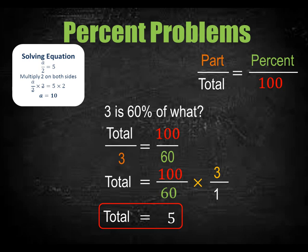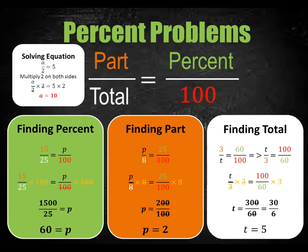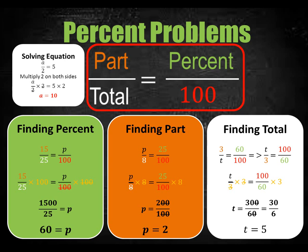All the cases of percent problems have been discussed. Let's review what was covered in this video. There are 3 cases in percent problems: finding percent, finding part, and finding total. All cases are solved using the basic equation: part over total equals percent over 100. Put in the given values and solve for the unknown. Hope you have understood the percent problems — now you can start practicing on your own. Best of luck.